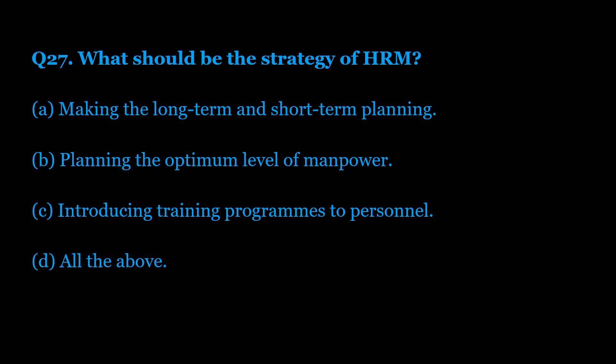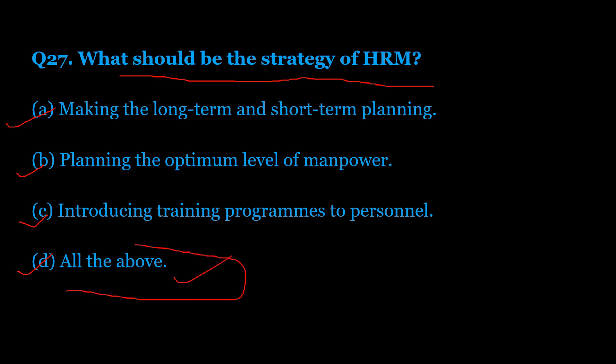Question number 27: What should be the strategy of HRM? Option A: making long-term and short-term planning. Option B: planning the optimum level of manpower. Option C: introducing training programs to personnel. Option D: all of the above. The correct answer is Option D — all of the above. All of these are strategies of Human Resource Management.